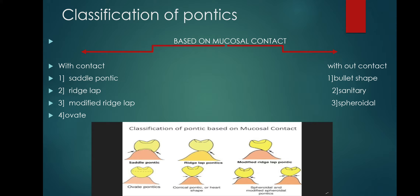Ovate pontics are generally used in ridge defects such as broad and flat ridges. These are also evolved from a design called root-extended or root-tip pontics.